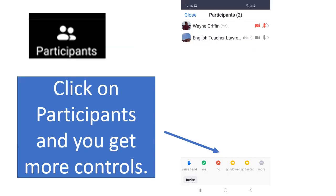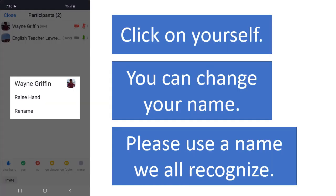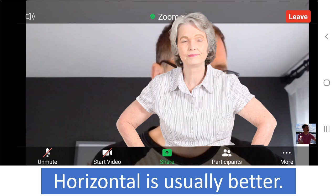Click on Participants and you get more controls. Click on yourself and you can change your name. Please use a name we all recognize. For the class, horizontal is usually better.